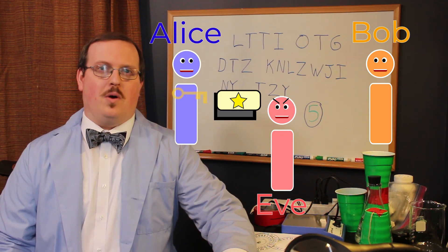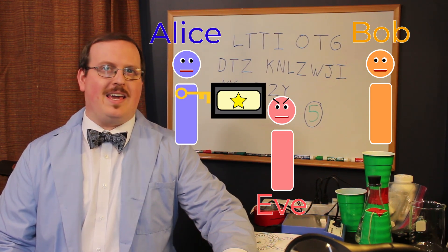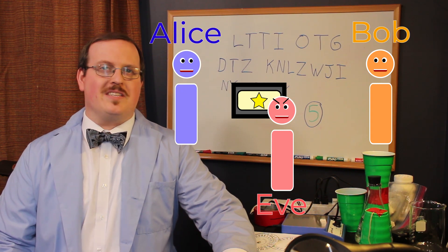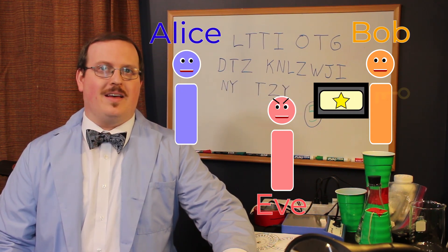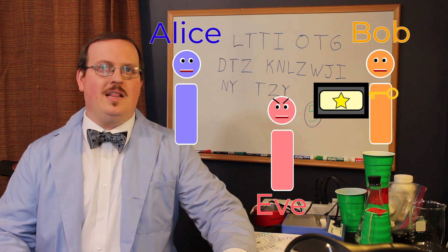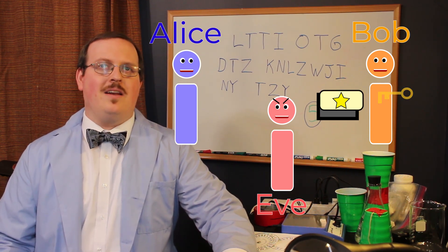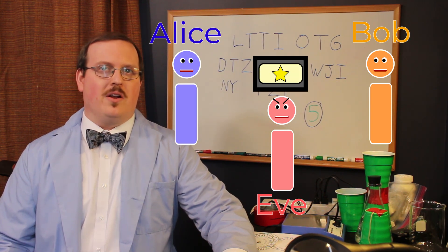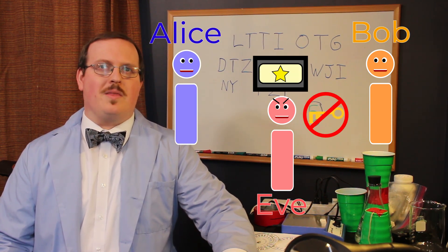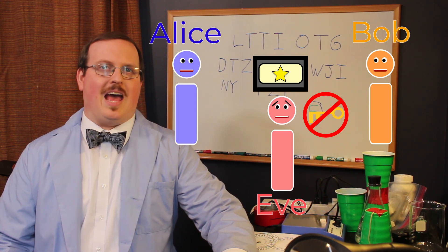Alice doesn't want Eve to be able to read her message, so what she does is she takes it and puts it into a box and locks it with a key. Then she sends the box to Bob. Bob gets it, takes his key, unlocks the box, and then Bob can read the message. But if Eve got to the box in the middle, then Eve couldn't read the message because she didn't have the key.